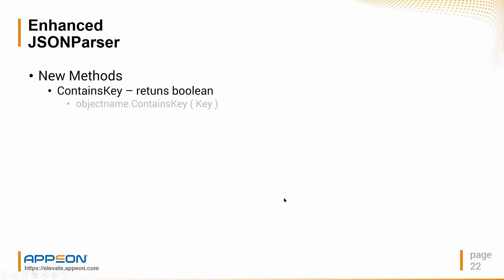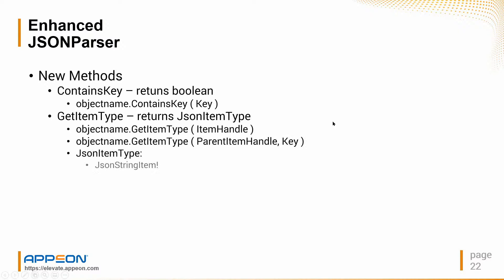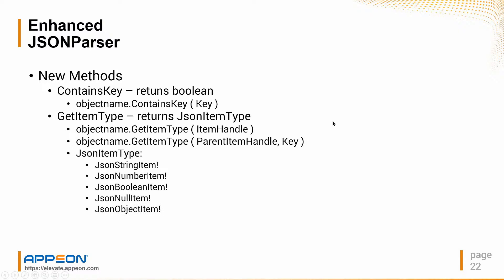The JSON parser has some new methods. There's containKey — previously you had to try to get the data and then check if it was null. Now you can just ask if the value is even there, and if some optional attribute in the JSON is absent, you can skip it. The getItemType allows more dynamic work with JSON — instead of knowing at code-writing time what the type will be, you can tell the JSON parser to determine what the data actually is and deal with it appropriately. It can be string, number, boolean, null, object, or array.